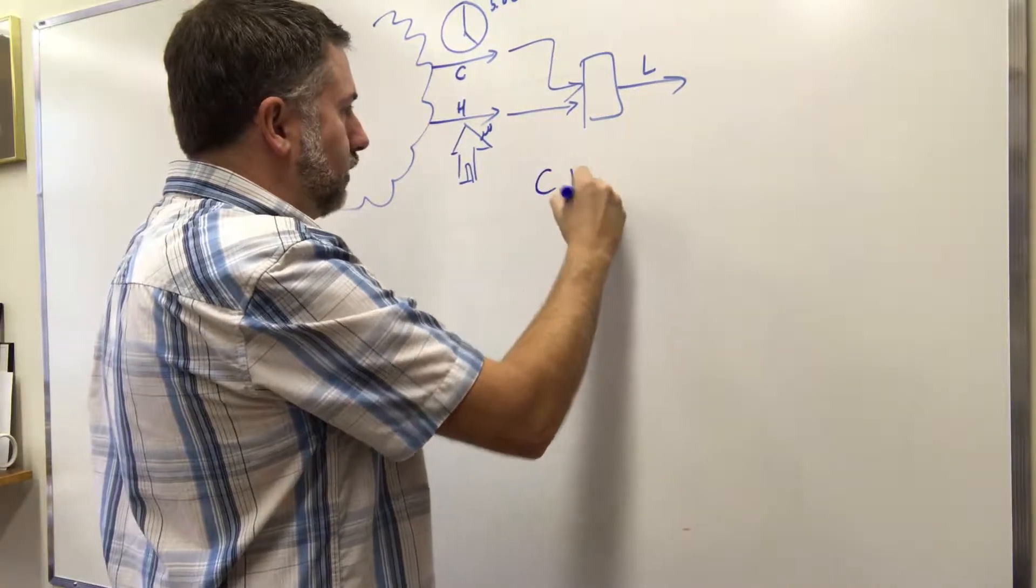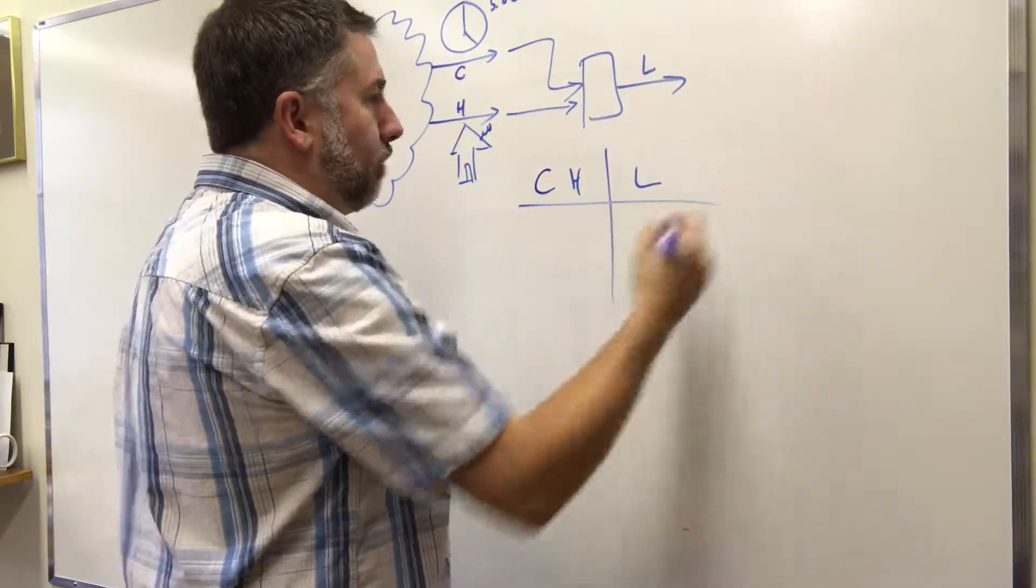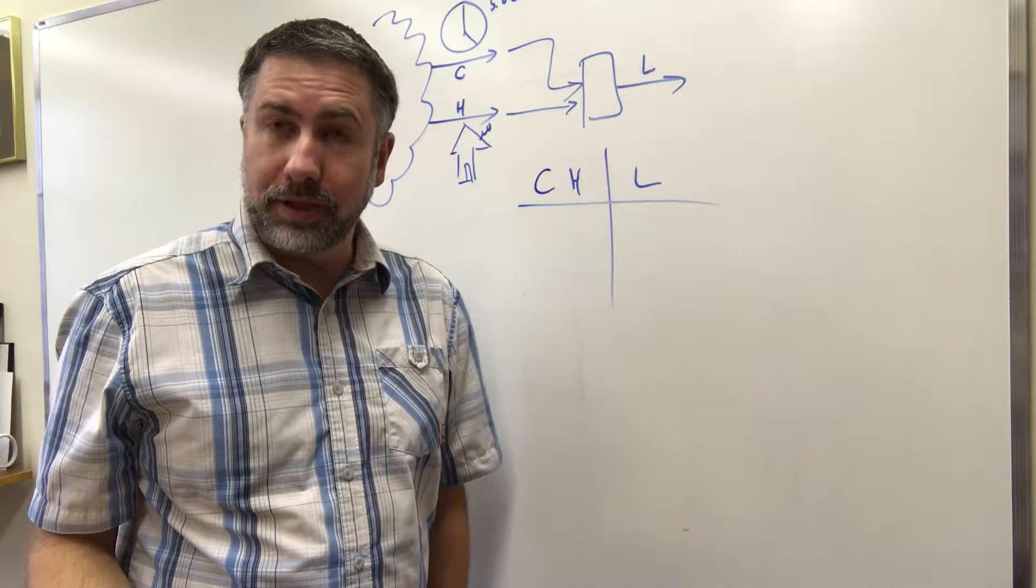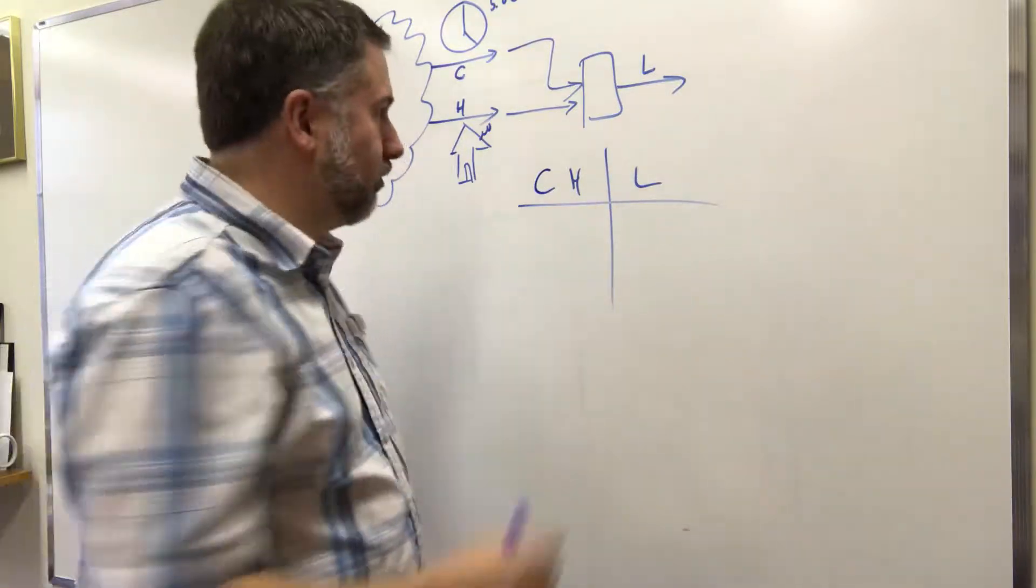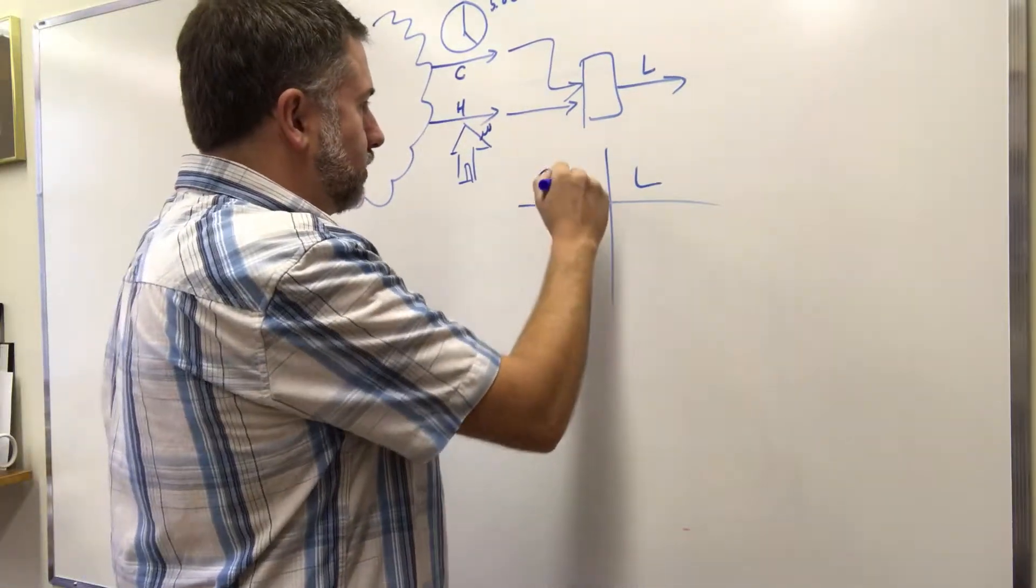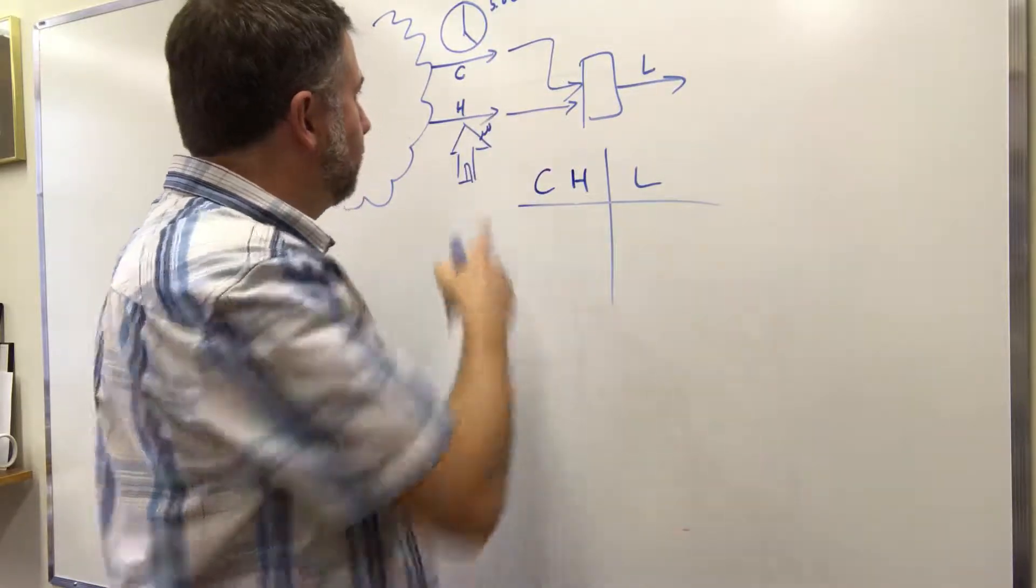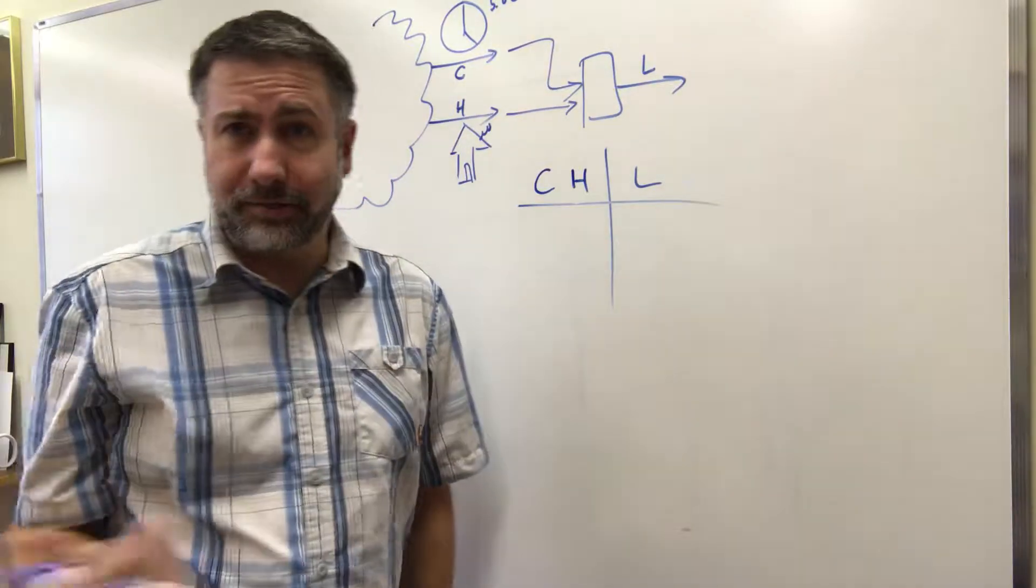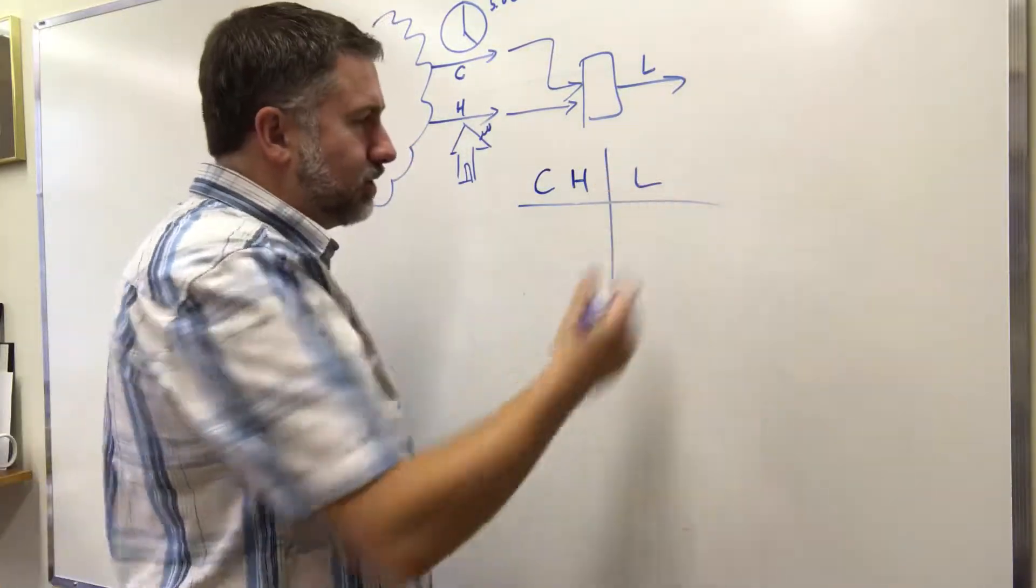Here are the two values, C and H, and then we want to know what the state of the light will be based on the states of C and H are two inputs. So, here's C, which is clock is 5 o'clock, here's H which means I've pressed the button because I've arrived at home. And what is the state of this light?